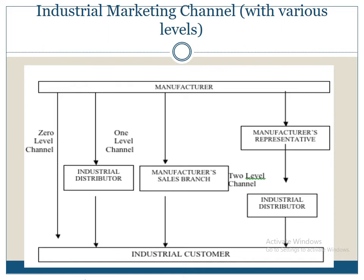This is the diagram of industrial marketing channel with various levels. From manufacturers to industrial customers, we reach through various channels. First can be zero level channel, where manufacturers can directly sell their products to industrial customers. There can be one level channels: from manufacturers to industrial distributors to industrial customers, or from manufacturers through the manufacturer's sales branch to industrial consumers. There can also be two level channels: from manufacturers to manufacturer's representatives, then industrial distributors to the final industrial consumers. So zero level has no intermediary, one level has a single intermediary, and two level has two intermediaries in the channel network.